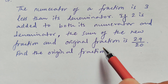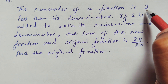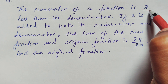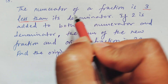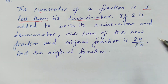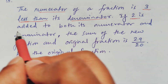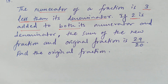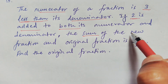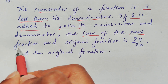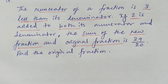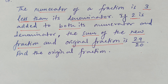Let us underline some keywords. The keywords are: numerator is 3 less than the denominator; and when 2 is added to both numerator and denominator, the sum of the new fraction and the original fraction is 29 by 20. These are the keywords we have underlined. Now let us start our solution.